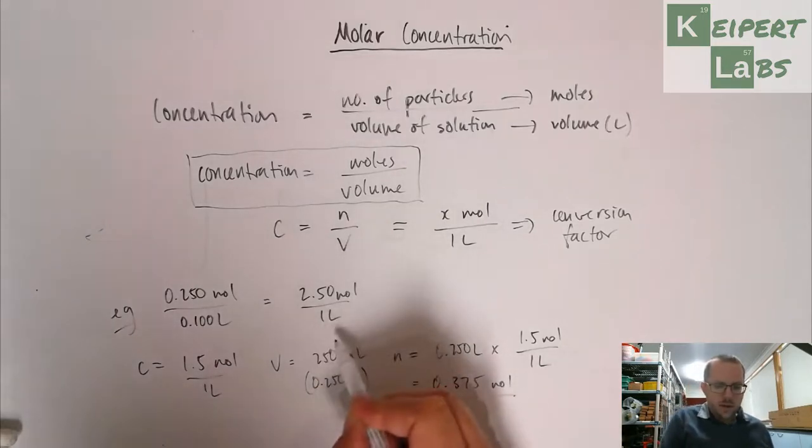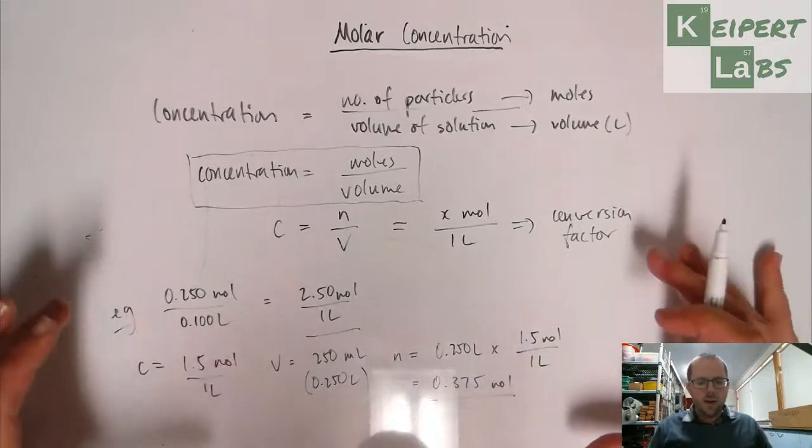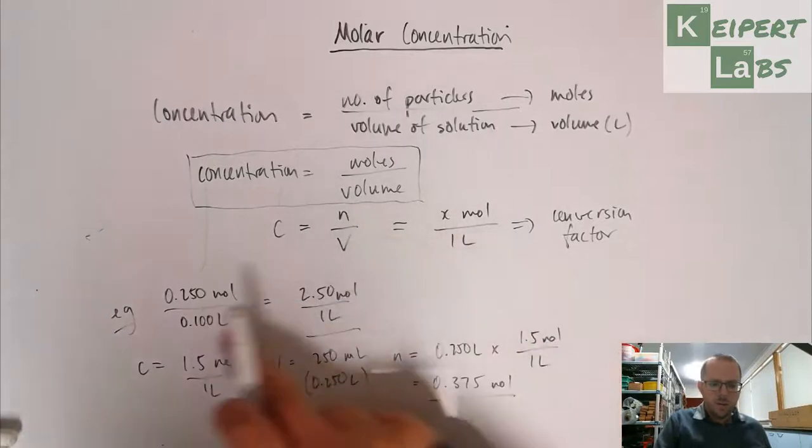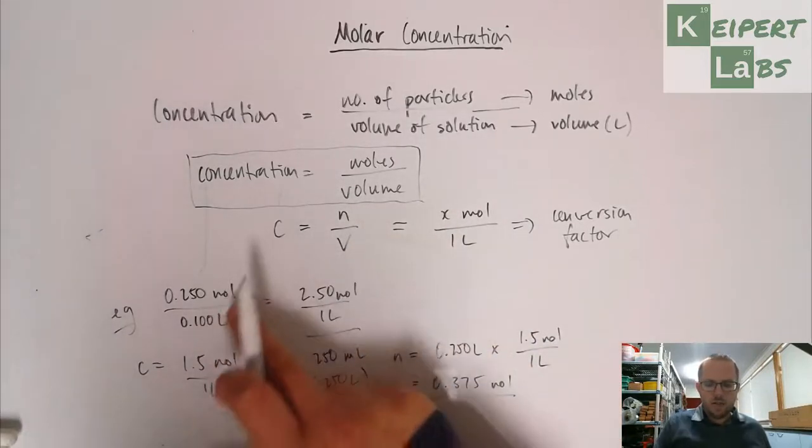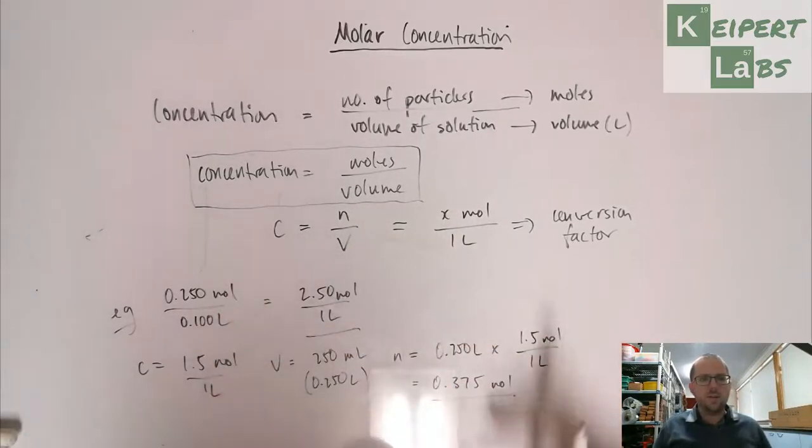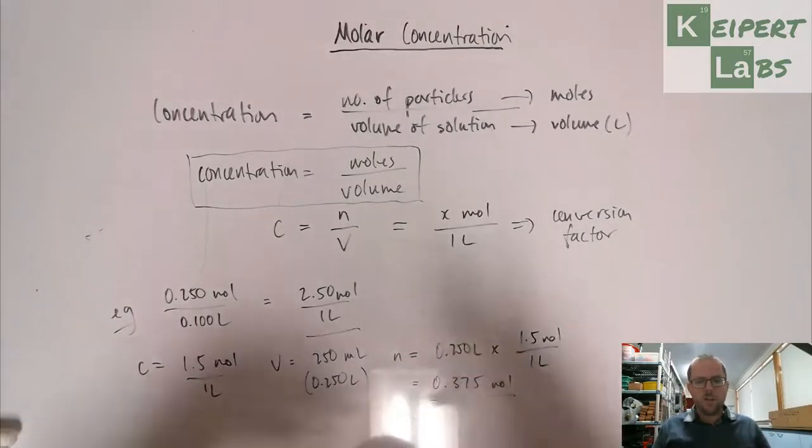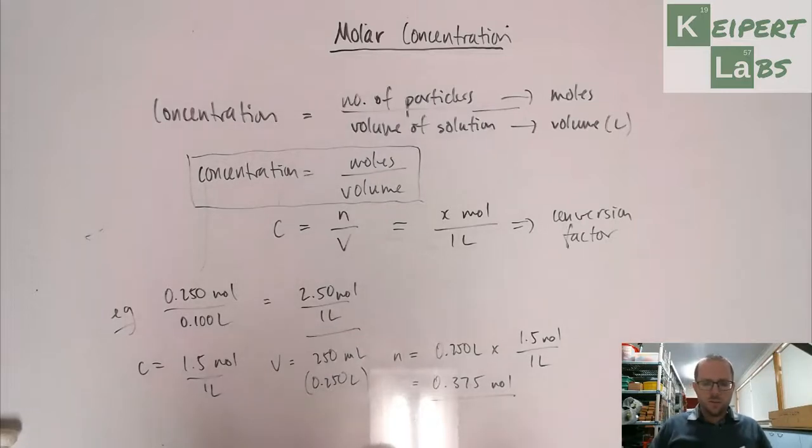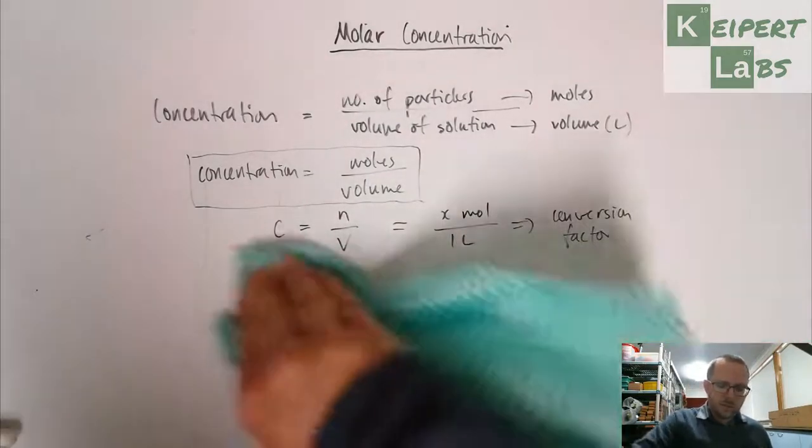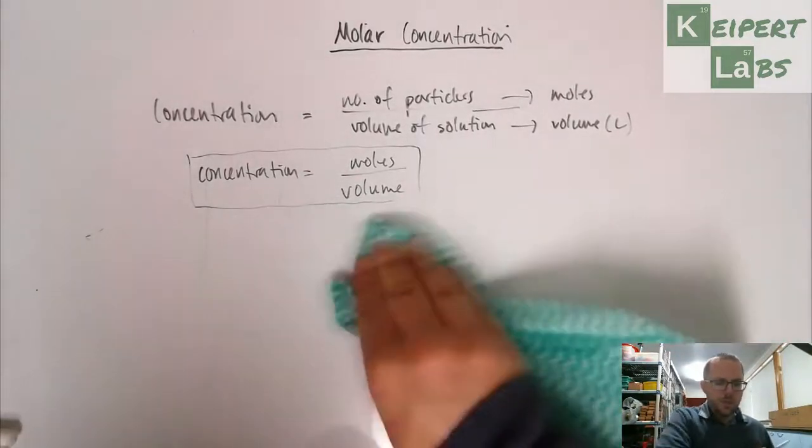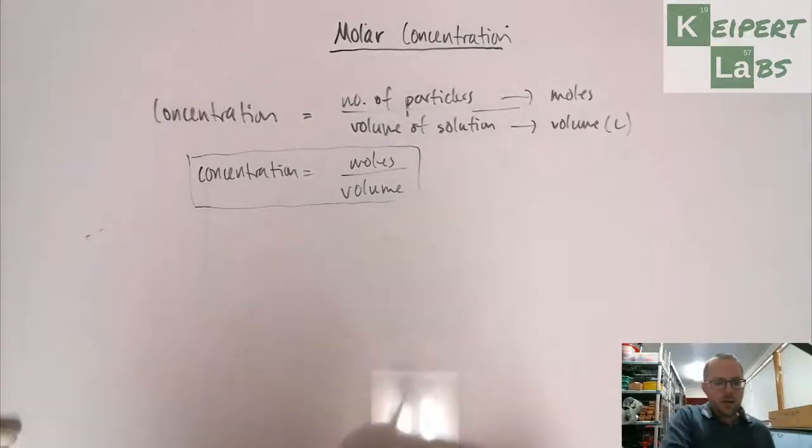So the idea being that this sort of relationship, I can now use a concentration in moles per liter to help. I can either calculate what that is using values that I have, or I can use it to convert between moles and volume. So it's kind of the fourth of the mole calculator that we've talked about in class before, that kind of diagram that looks a bit like a compass.